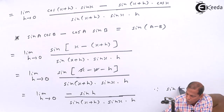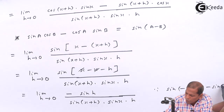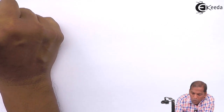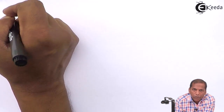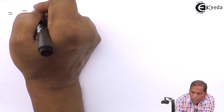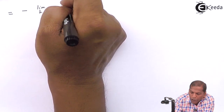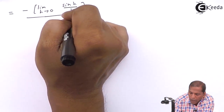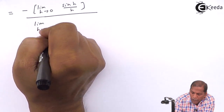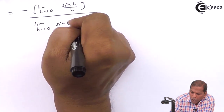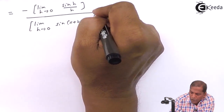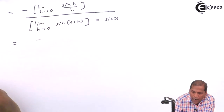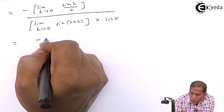Since sin(minus θ) is equal to minus sin(θ), we arrange the limit. We write minus sign first of all outside the limit. Then limit h tends to 0, sin(H) upon H, that we write in the numerator. The whole thing is divided by limit h tends to 0, sin(X+H) into sin(X). That equals minus, and limit h tends to 0, sin(H) upon H gives 1.